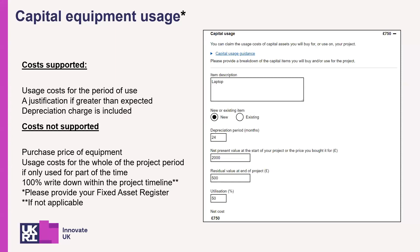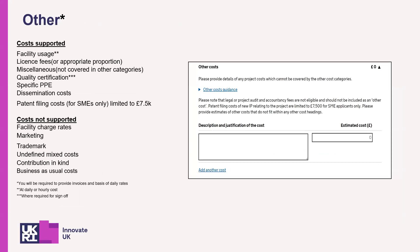For capital usage, you'll need to describe how you're using the equipment, whether it is new or existing, the new purchase cost, how long you are depreciating it over, and the residual value at the end. These calculations will need to be in line with your accounting practices. Please check the finance guide for what costs can be included here, and if you are unsure, please contact our customer support team. You would include any costs which do not fit into any previous categories, but please ensure there is no double counting and all costs are justified.